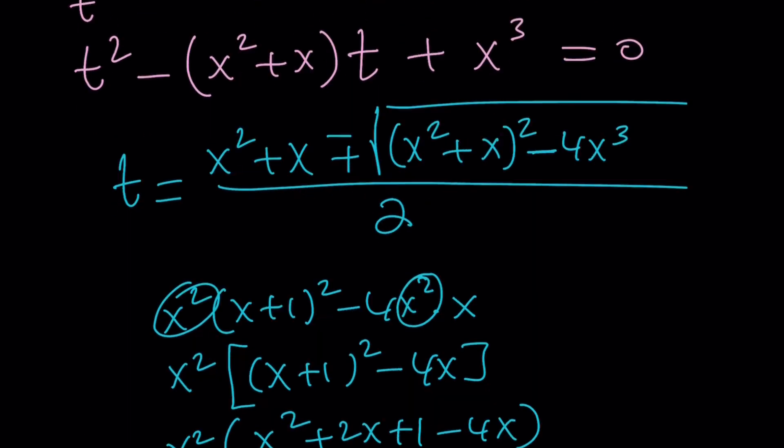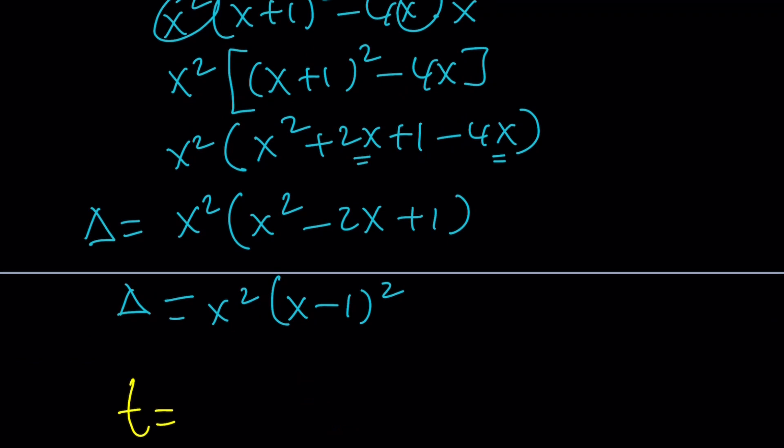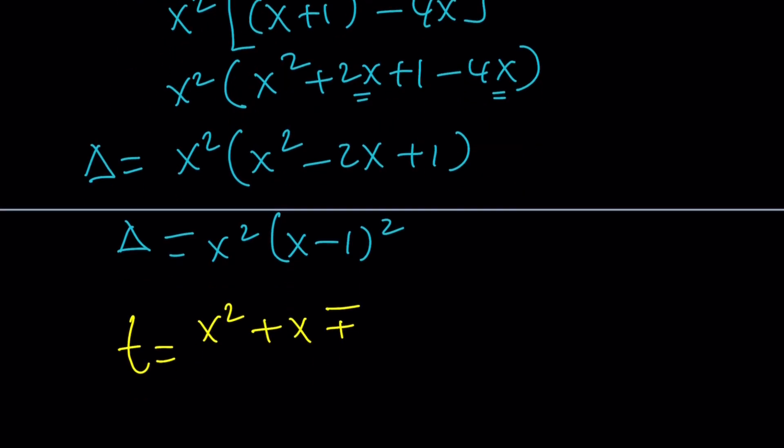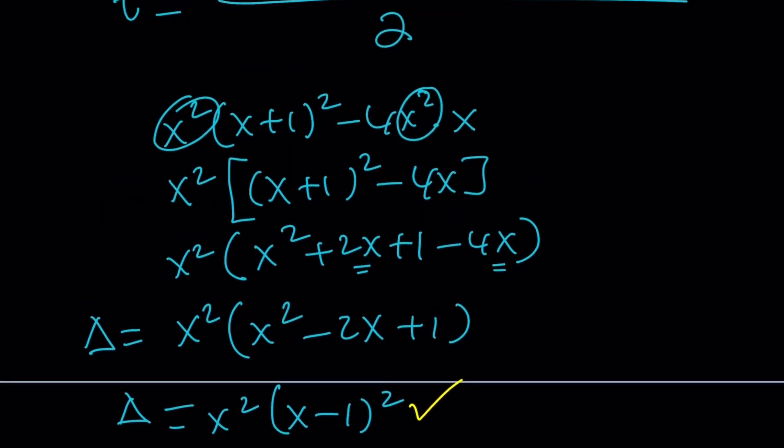So our delta is x squared times x minus 1 squared. So I can go ahead and square root it very easily. With the plus minus sign, everything will be taken care of. So the t values from here is going to be t equals x squared plus x plus or minus the square root of delta, which is x times x minus 1. And then all of that is divided by 2.